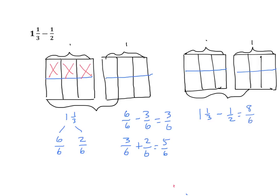And we're going to subtract 1 half. Let's change the 1 half to our common denominator. So 1 half is still 3 sixths. So we're going to just take 3 away from our 8, crossing out 3. And if we count what we have left, we have 5 left. So our answer is 5 sixths, either way we do it. The first one is Method 1 and the second one is Method 2.